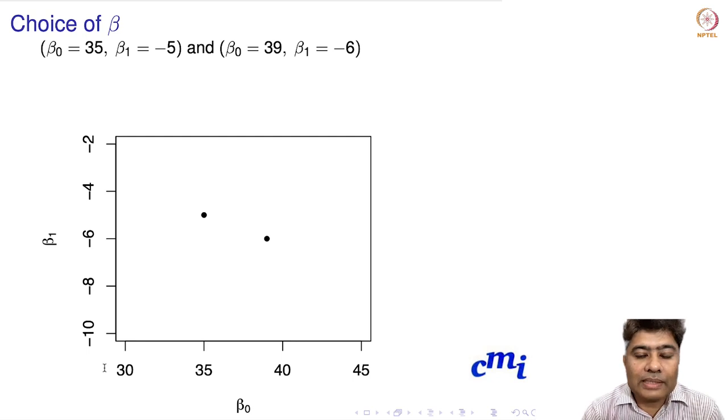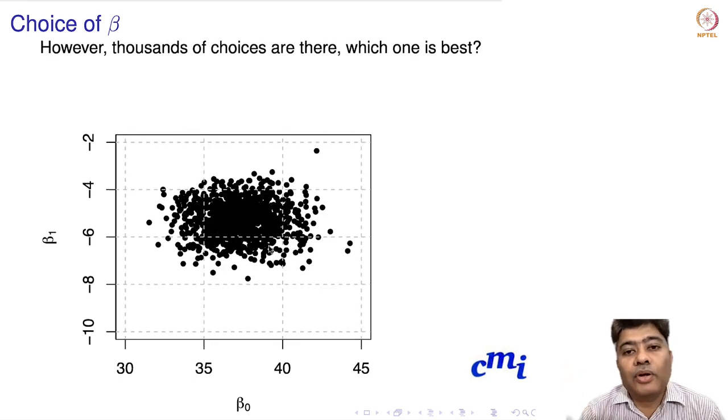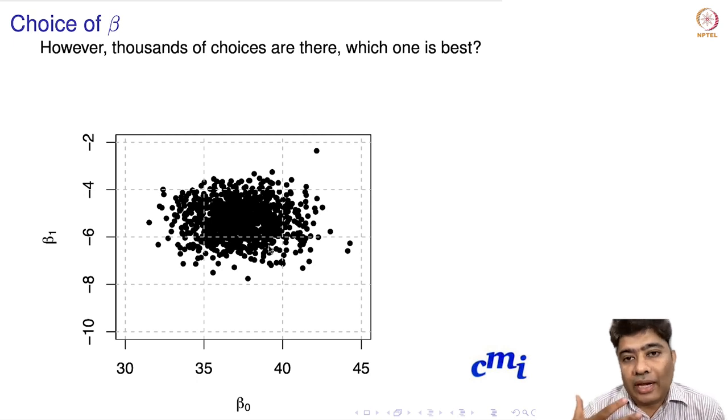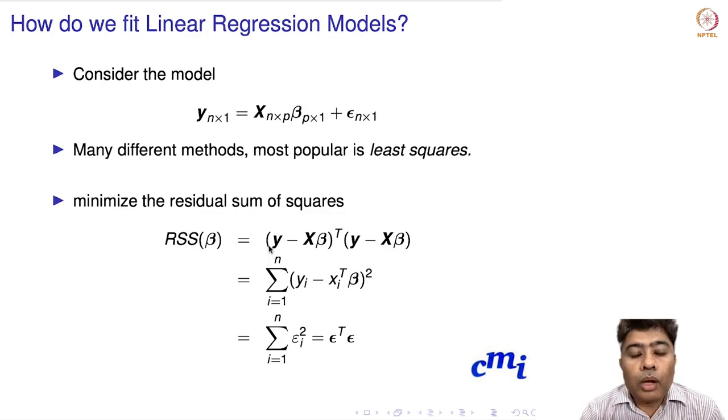What are the choices of beta that I can have? Beta naught can take values around this axis, and suppose beta 1 takes values around this axis. One possibility is beta naught 35 and minus 5, another is 39 and minus 6. These give two possible lines. The question is which one to choose? But another question: why should I choose between only these two? There could be infinitely many possible choices of line, and each choice of beta gives a different line. Which beta to choose?